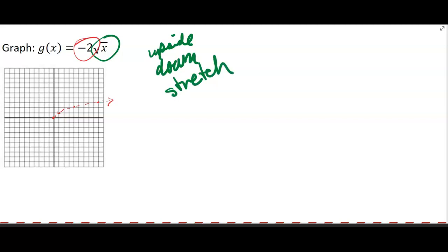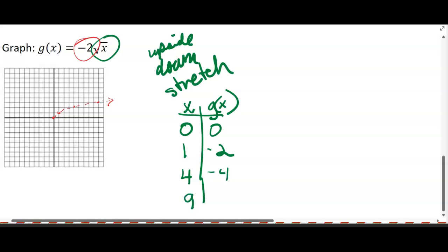What you could do is a table of values; that would help you get a better shape for the curve. Think of nice numbers you could put in. Zero is a nice number; the square root is 0, 0 times negative 2 is 0. One is a good number; square root of 1 is 1 times negative 2. Four is a good number; square root of 4 is 2, 2 times negative 2. Nine is a good number; square root of 9 is 3, 3 times negative 2 is negative 6.